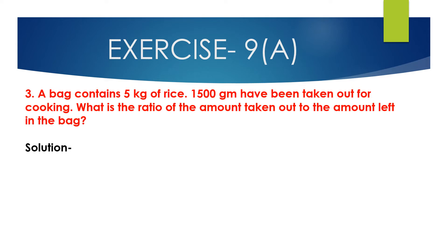Now we will solve question number 3. A bag contains 5 kg of rice and 1500 grams have been taken out for cooking. What is the ratio of the amount taken out to the amount left in the bag? It is given that the quantity of rice in the bag is 5 kg, that is 5000 grams, and 1500 grams have been taken out for cooking.